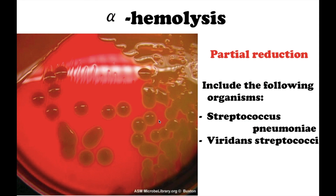Alpha hemolysis includes the following organisms: Streptococcus pneumoniae and viridans streptococci.